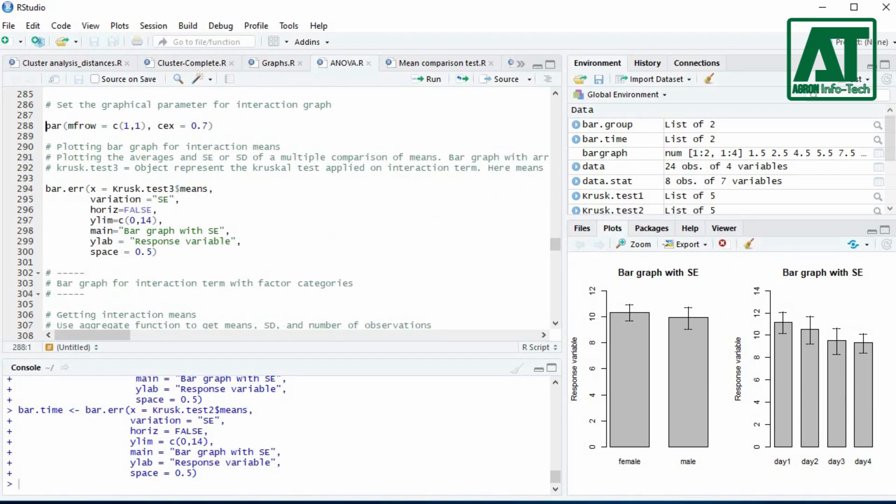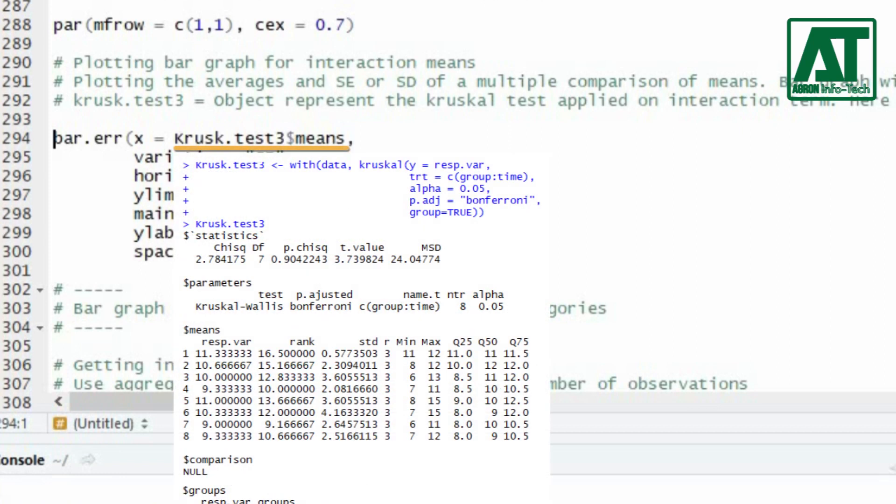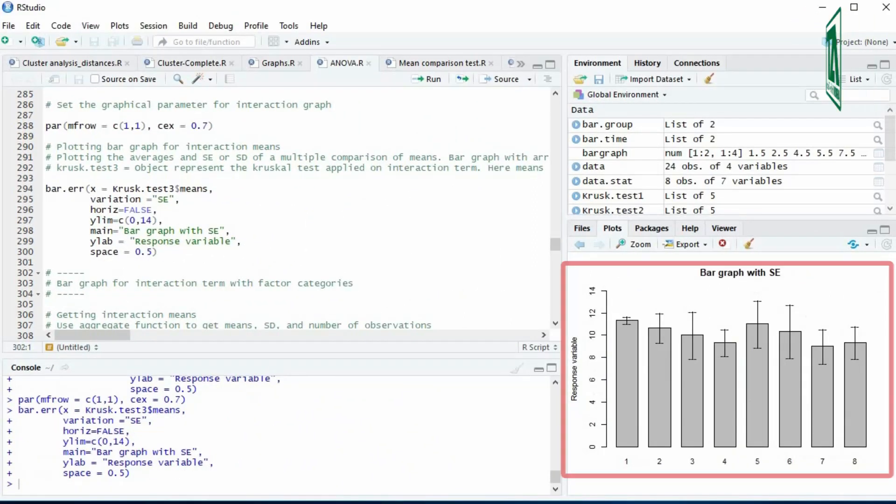To plot bar graph for interaction term, set the graphical parameter again to draw single graph on the device. Again use bar.error function. Specify x argument as an object that represents comparisons of means component from Kruskal-Wallis test that was applied on interaction term. This will plot interaction bar graph.